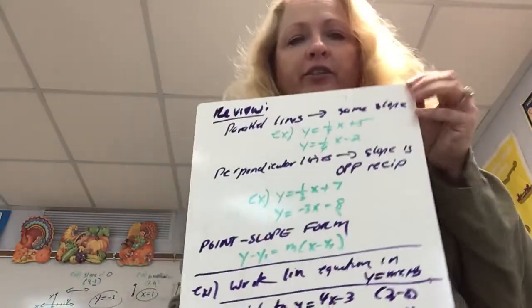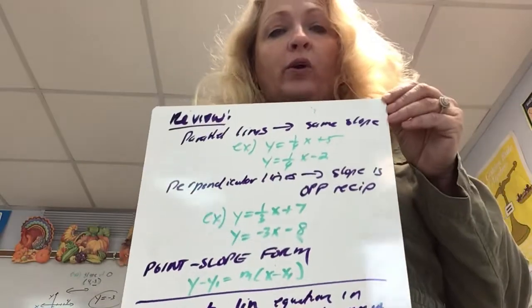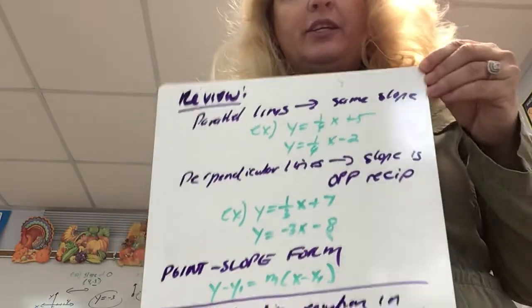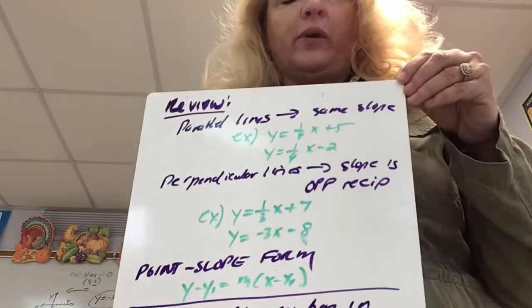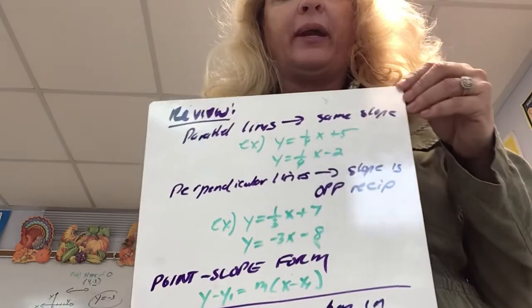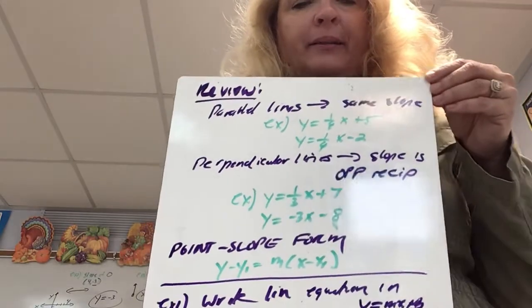We're continuing writing equations of lines, but we're going to add some conditions with it. We're going to talk about writing equations of parallel and perpendicular lines.